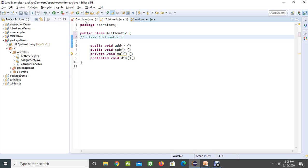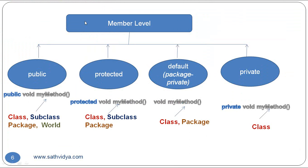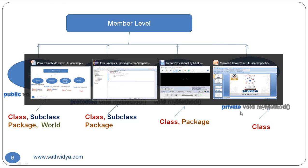Now let's talk about the member level. At the member level, we have four modifiers: public, protected, default — which is again package-private — and private. Public means you can use it with other classes as well. Protected means you can use it for classes, subclasses and packages. Default is package-private but you cannot use it for subclasses. Private can only be used within the same class — you cannot use it even in other classes in the same package.